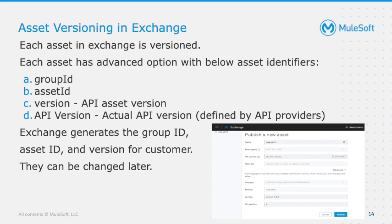What customers have to change frequently is the version. Initially when you create an asset it is always created as 1.0.0, and any time you make a change the version keeps getting updated. The API version applies only to asset types such as REST API, SOAP API, API fragment — you won't see it for a connector, example, or template. The relationship between API version and the actual asset version is the key concept we'll cover in the coming slides.